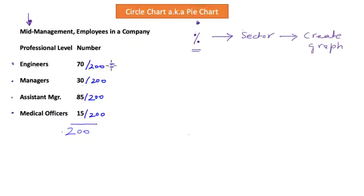So 70 over 200 becomes 35%. Managers are 15%. Then we have assistant managers at 42%, and finally medical officers at 8%. We need to make sure this total adds to 100%. So 35 and 15 is 50, and 42 and 8 is 50, so this is 100%.